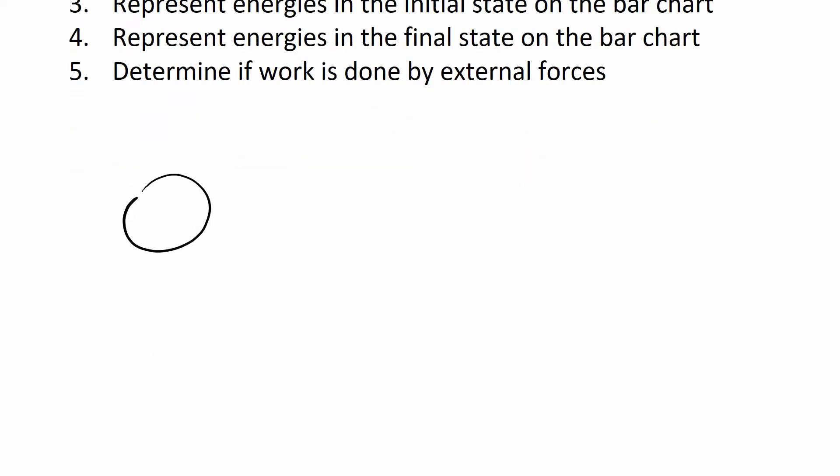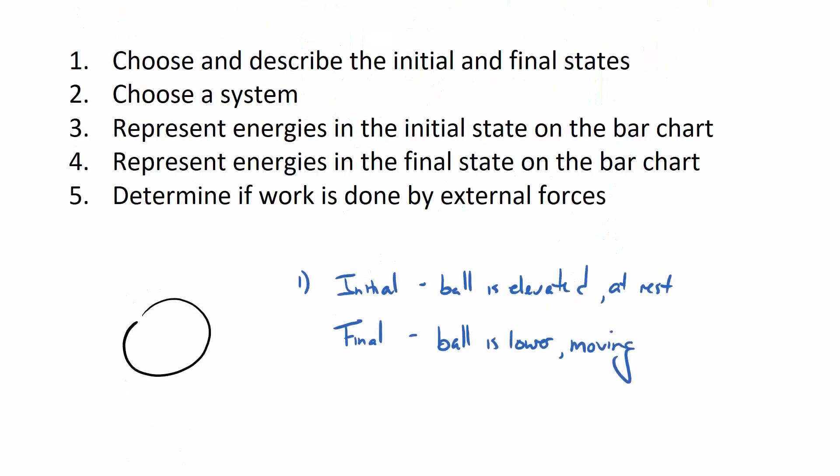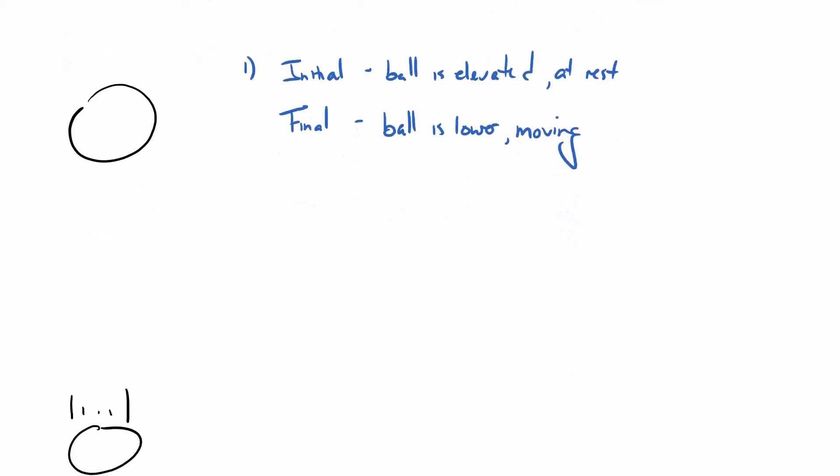So consider this thrilling case. A ball is dropped. It's fantastic. So, choose and describe the initial and final states. So the initial state. The ball is elevated. It is at rest. I don't see any springs or anything. Nothing seems to be on fire or deformed. So that's about as much as I need to worry about. The final state. The ball is lower. And based on those speed lines, it appears to be moving.